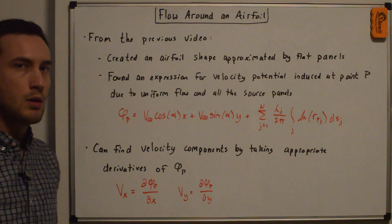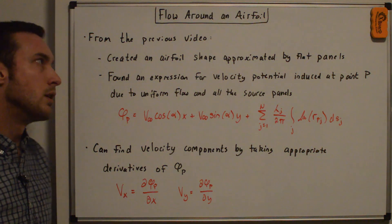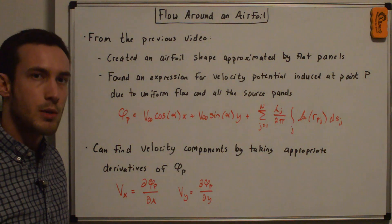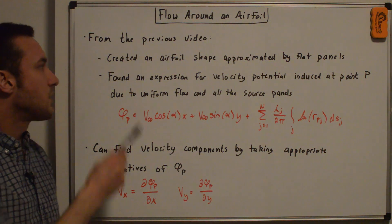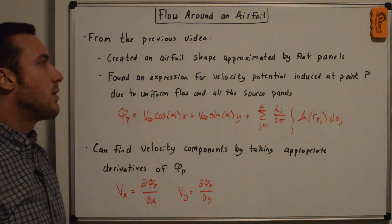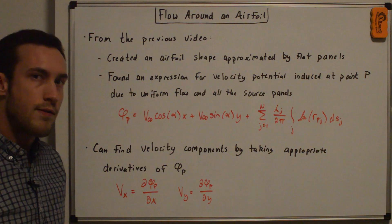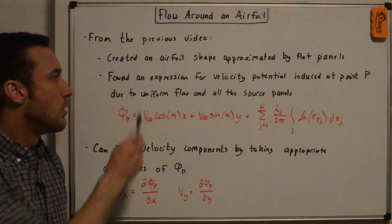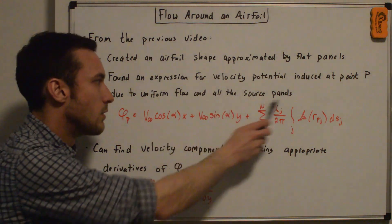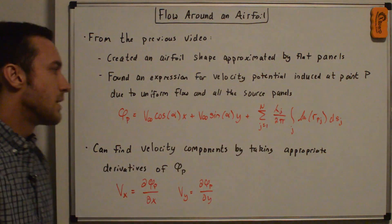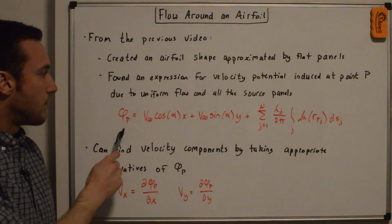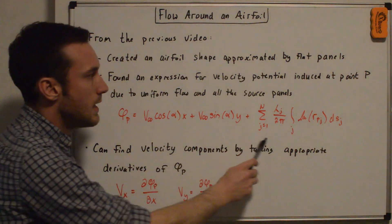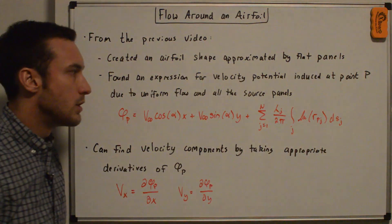From the previous video, the building more complex flows video, we did a couple things. First, we created an airfoil shape that's approximated by flat panels. And second, we found an expression for the velocity potential phi, induced at an arbitrary point P in the flow field due to both uniform flow and all of the source panels. So phi_P is equal to the uniform flow contribution and the source panel contribution.